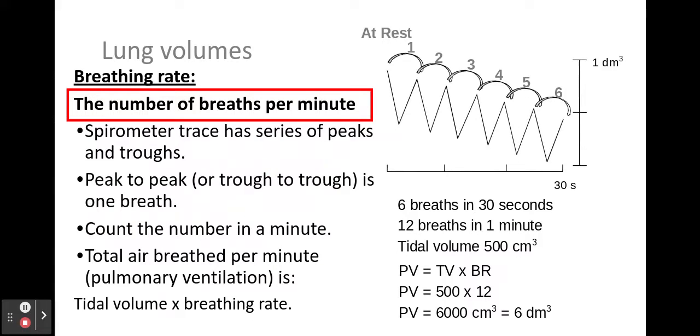The breathing rate is the number of breaths per minute. You can either count them or you can be given one breath, work out how long one breath is and then divide 60 seconds by that one breath. The key thing here is to look at the time in which these breaths are taking place. In this case I've got six breaths in 30 seconds, so I'd have 12 in a minute.